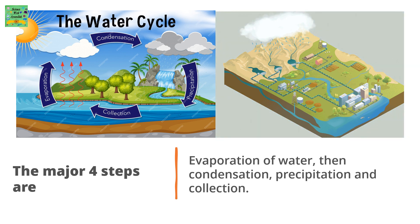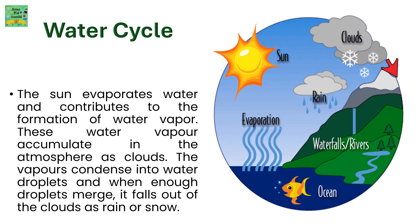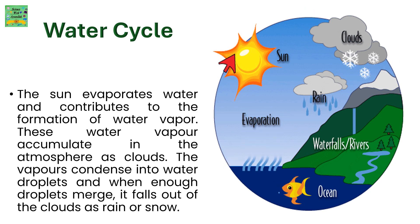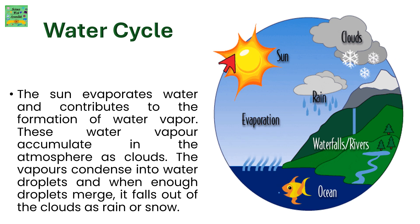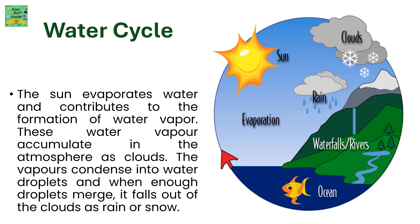There are 4 major steps in the water cycle. The first one is evaporation of water, then condensation, then precipitation, and lastly collection. The water cycle is a biogeochemical cycle that involves the continuous movement of water on, above, and below the surface of the earth. The sun evaporates water and contributes to the formation of water vapor. These water vapors accumulate in the atmosphere as clouds. The vapors condense into water droplets, and when enough droplets come together, it falls out of the clouds as rain or snow.